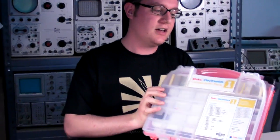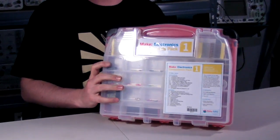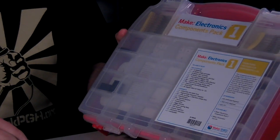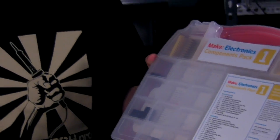So this is the kit to do about the first half of the Make Electronics book. It says here that this is everything you'll need to do experiments 1 through 11.